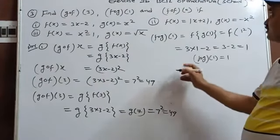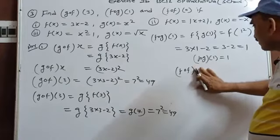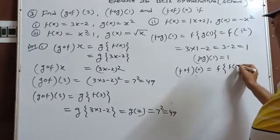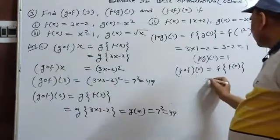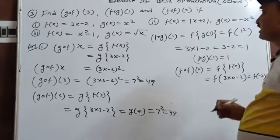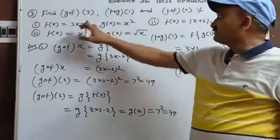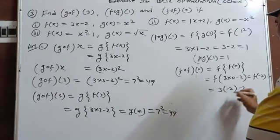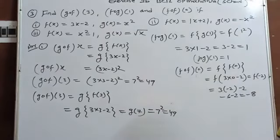fog(0)=f(g(0))=f(0²)=f(0). f(0)=3×0-2=-2. Then f(-2)=3×(-2)-2=-6-2=-8. So fog(0)=-8.